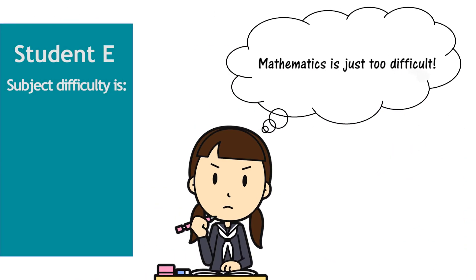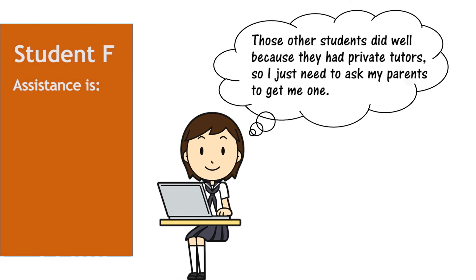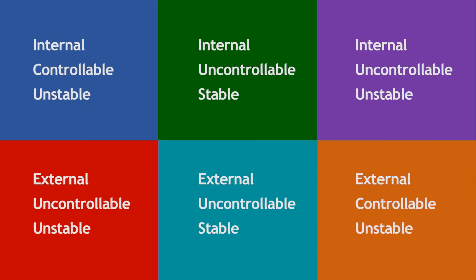Student E's reason — 'Mathematics is just too difficult' — is external, uncontrollable, and stable. And Student F's reason — 'Those other students did well because they had private tutors' — is external, controllable, and unstable. So altogether, there are six combinations: three internal ones and three external ones.